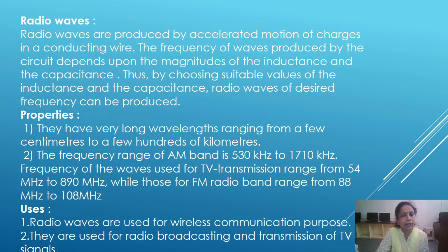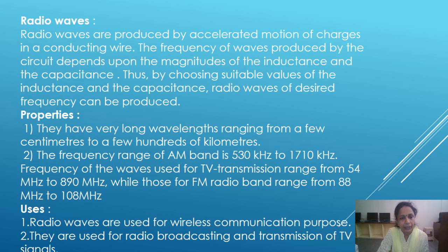The first type of waves is radio waves. Radio waves are produced by the accelerated motion of charges in a conducting wire. The frequency of waves produced by a circuit depends upon the magnitudes of the inductance and capacitance. Thus, by selecting suitable values of inductance and capacitance, radio waves of desired frequency can be produced.